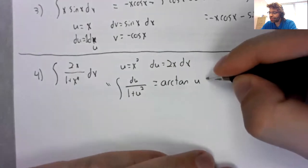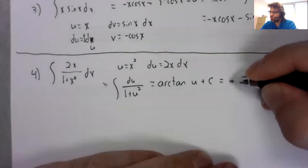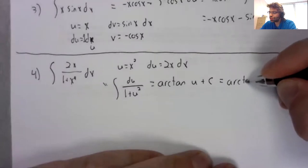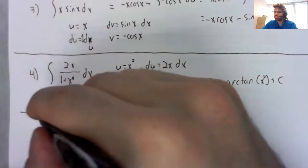And then this is the arctangent of u, which is the arctangent of x squared.